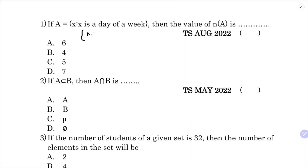The elements will be Monday, Tuesday, Wednesday, Thursday, Friday, Saturday and Sunday - so the total elements are 7. They are asking the number of elements in set A, which is the cardinal number, so the correct option is B.